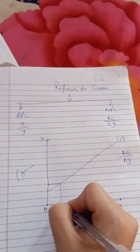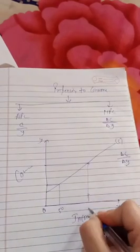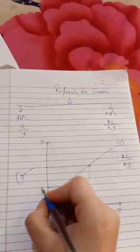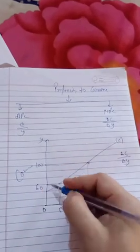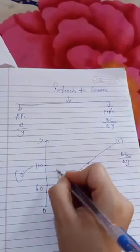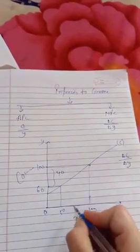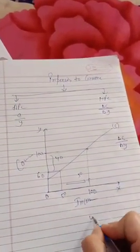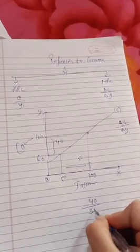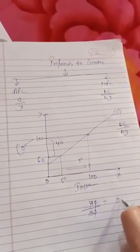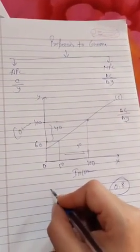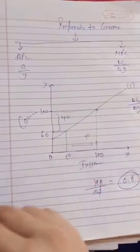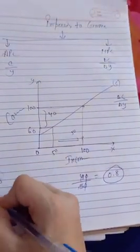Looking at the table: if income increases from 50 to 100 (a change of 50), and consumption increases from 60 to 100 (a change of 40), then MPC = ΔC/ΔY = 40/50 = 0.8. So the slope of the consumption curve here is 0.8.